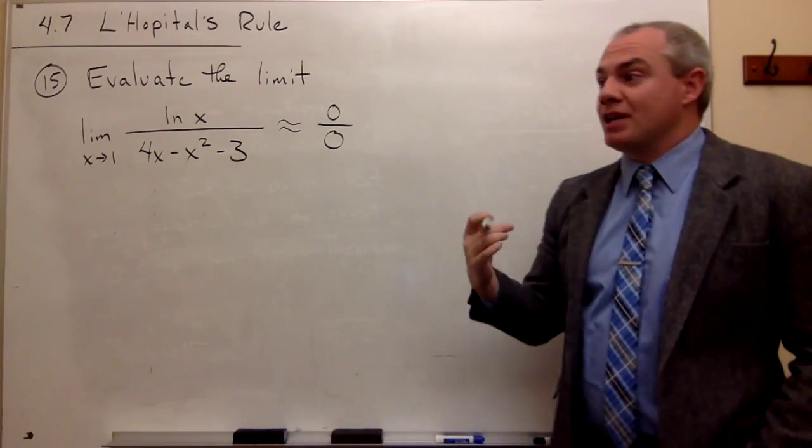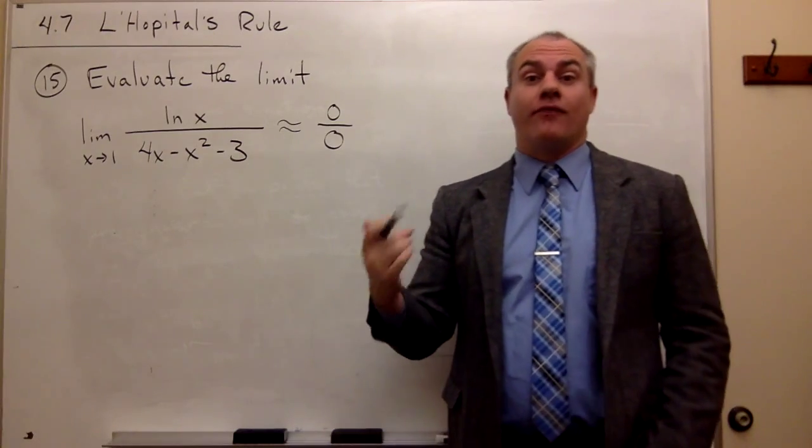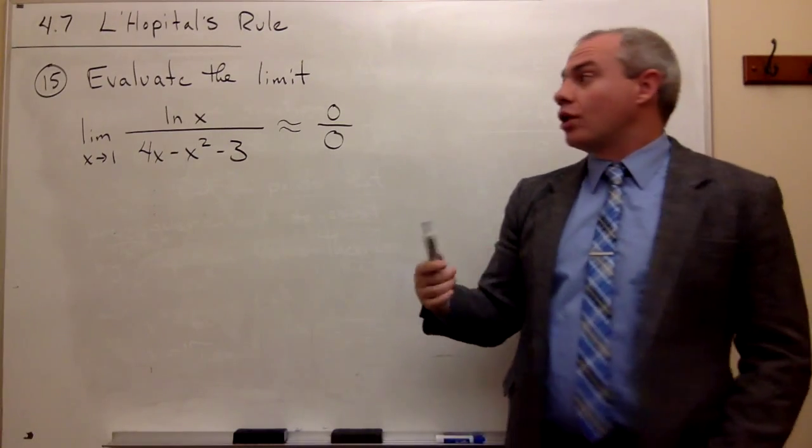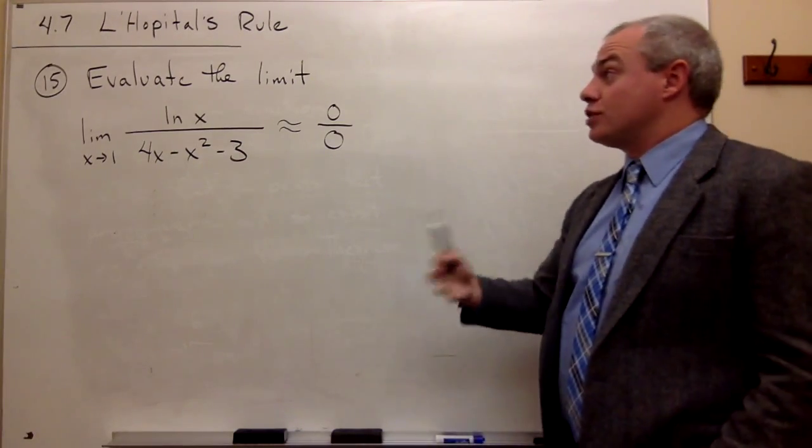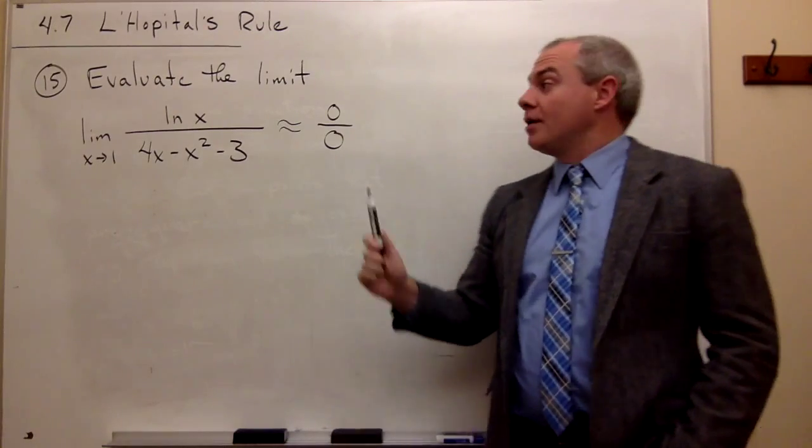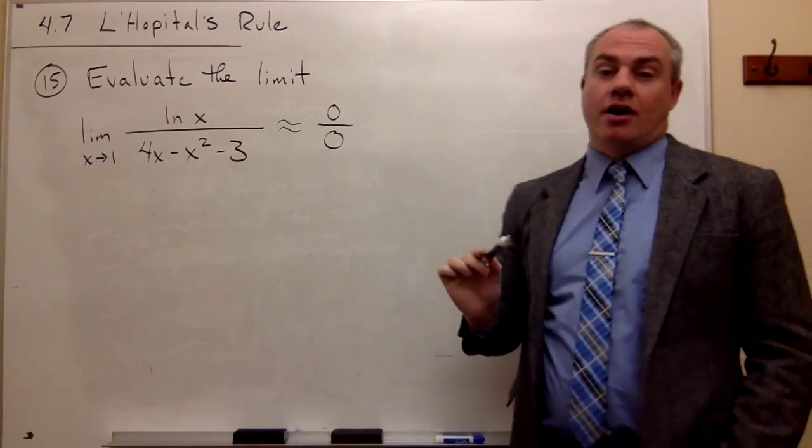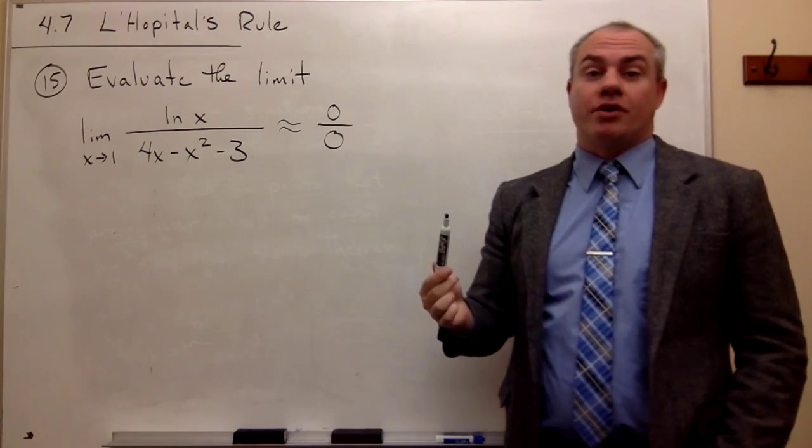Okay, so that might mean we have to do more work to get it into a form for L'Hôpital's rule, or it might mean that you just can't use L'Hôpital's rule at all. But since this has the form 0 over 0, then we can use L'Hôpital's rule.